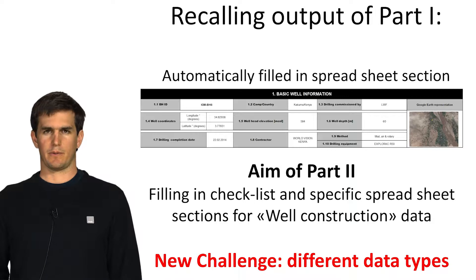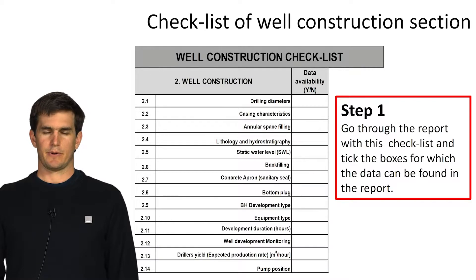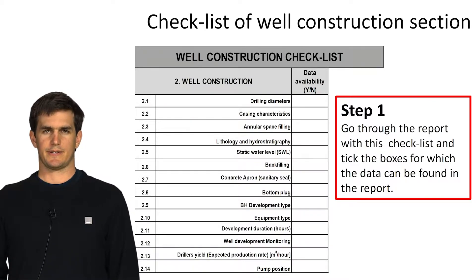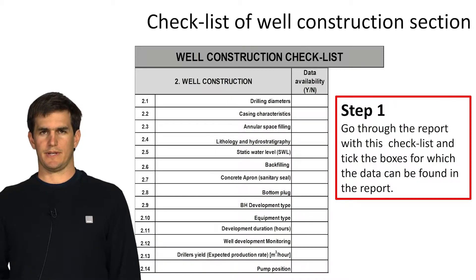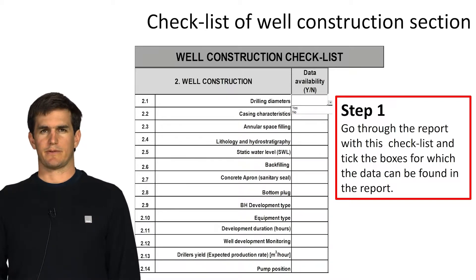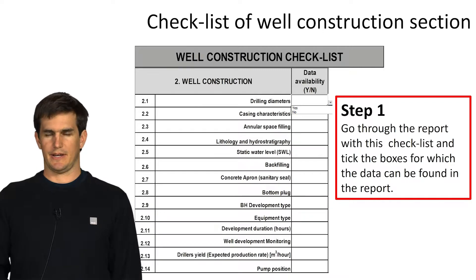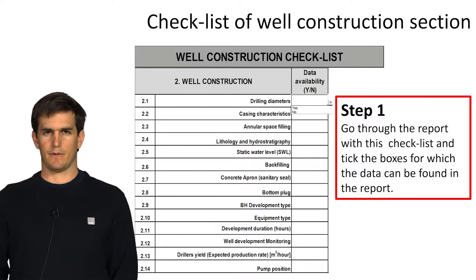This spreadsheet is easy to use and we will go through it together. Now let us take the same example as in Part 1 and input the data in the checklist. The first step is to see what data is available and what is not. In this updated version, you can select from a drop-down list yes or no — yes if the data exists, and no if it is nowhere to be found.